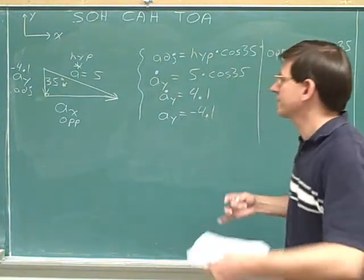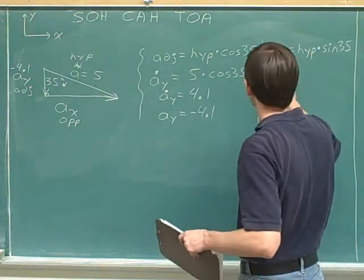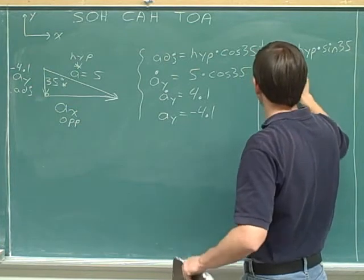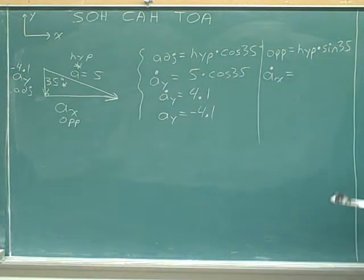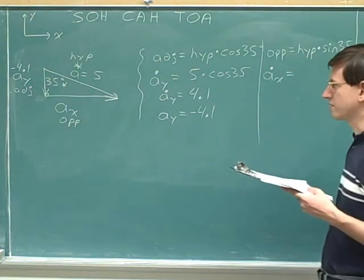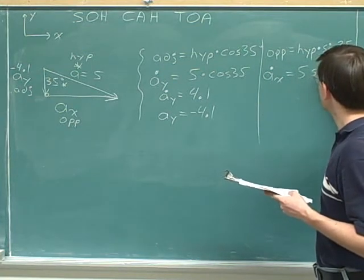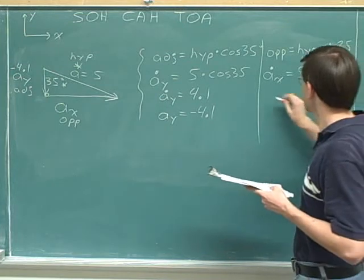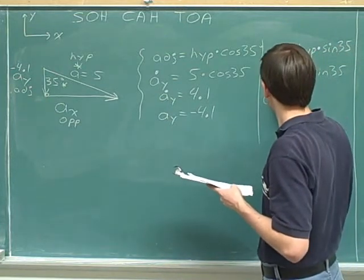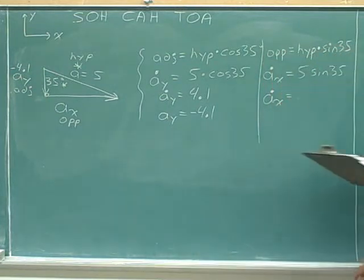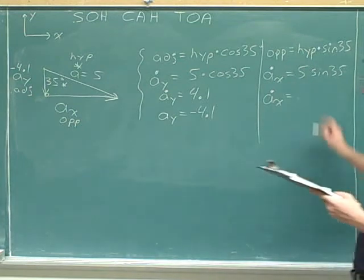Now, our label for the opposite side here is A sub X. A sub X with a dot, since right now we're just talking about its length. When we're dealing with trig functions, we're just dealing with lengths. The hypotenuse is 5, and we've got the sine of 35. 5 times the sine of 35 is 2.9.